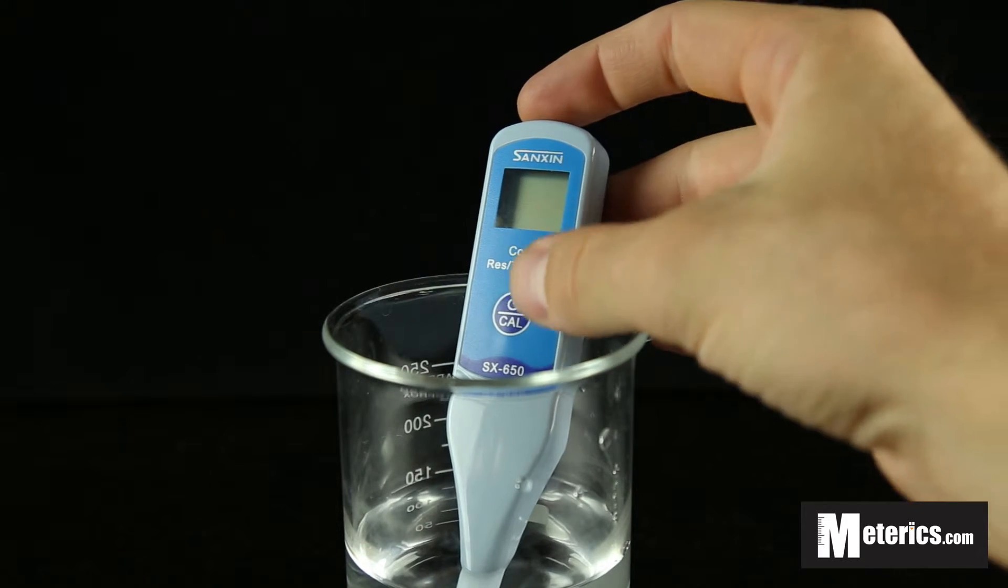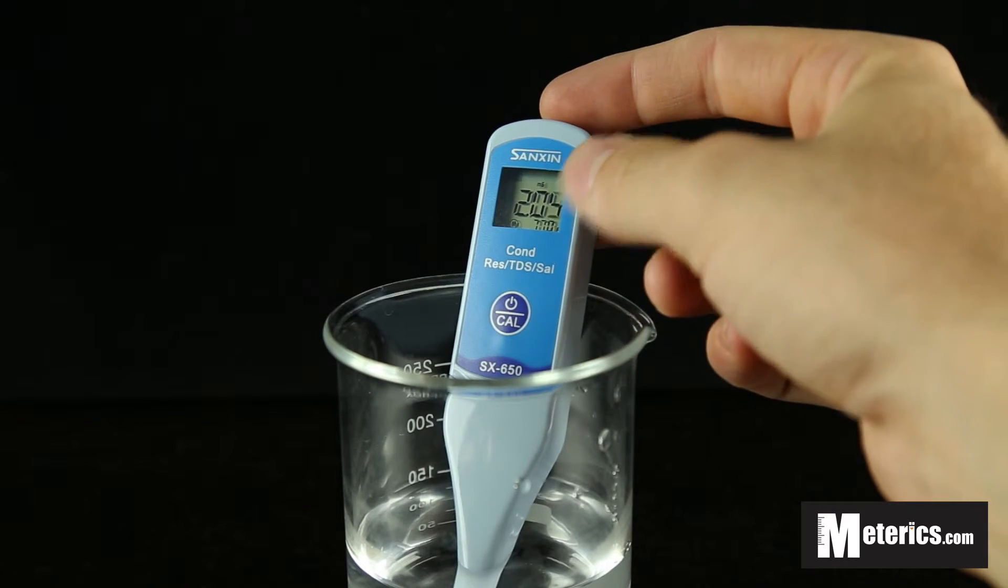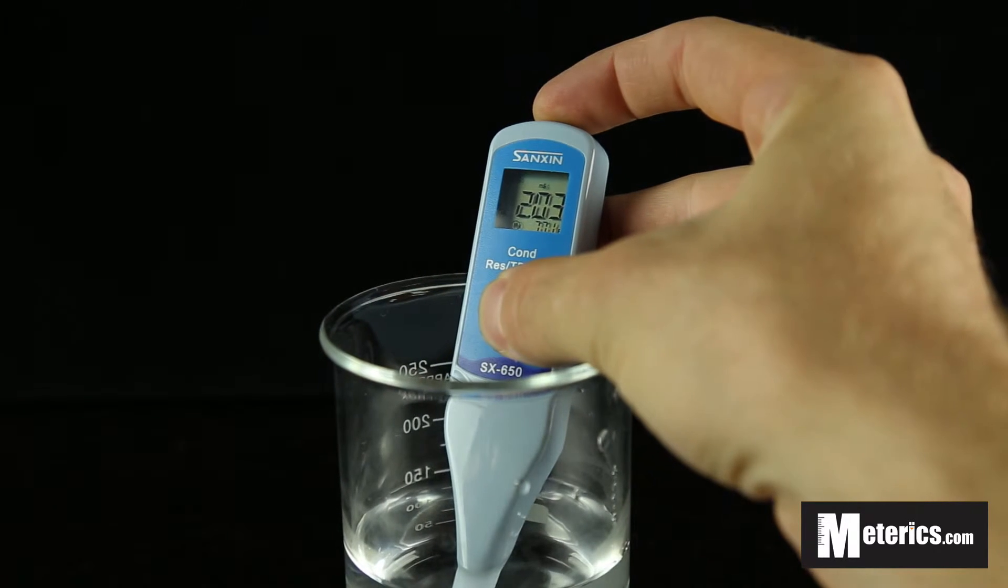To get started, you simply turn it on with the only button on the meter, and then to switch between measurements you hold that button down for a moment.